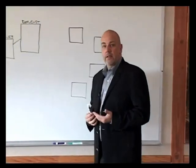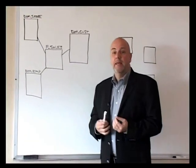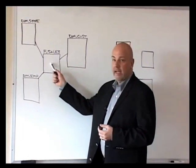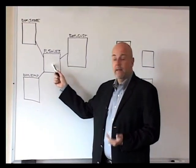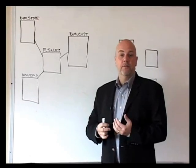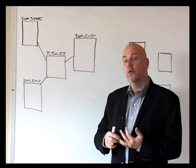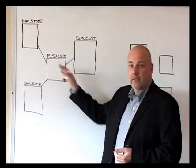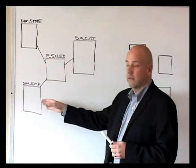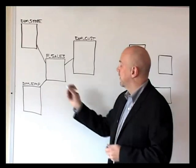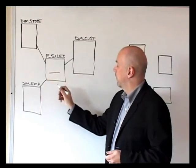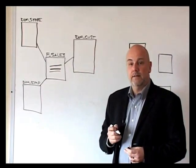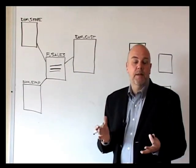We've started with a traditional view of a star schema from a dimensional modeling perspective. In this case, we have a fact around sales. The fact includes some metrics, for example, dollars amount sold, units sold, and that type of thing. This fact is inclusive of a couple of dimensions that have their foreign keys embedded. There's a foreign key for employee, foreign key for store, and a foreign key for customer. A very common case for dimensional modeling.